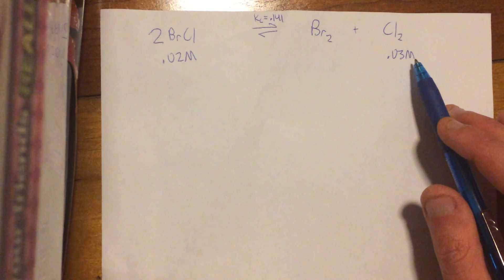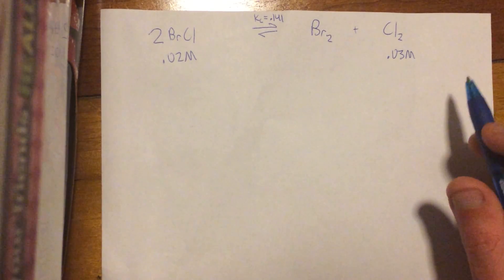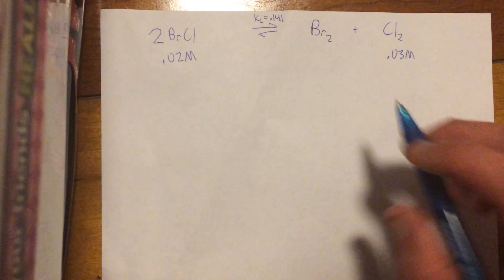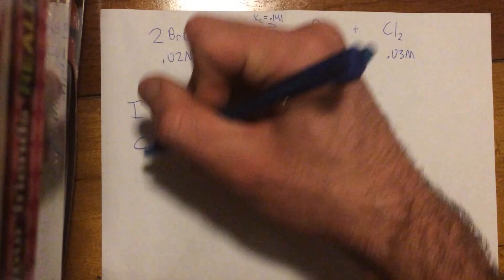And then, it doesn't tell you the liters here, so we can just assume it's just one liter. So I guess this will, 0.03 will actually also be moles. So anyway, next, so the ice table, we do I, C, E.